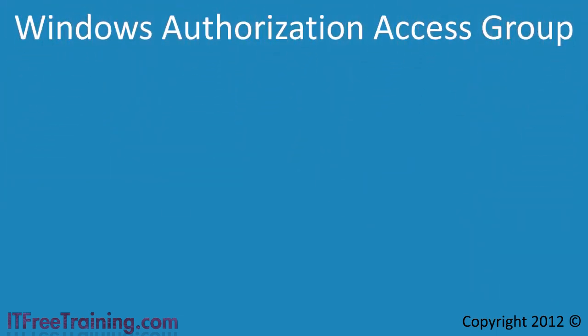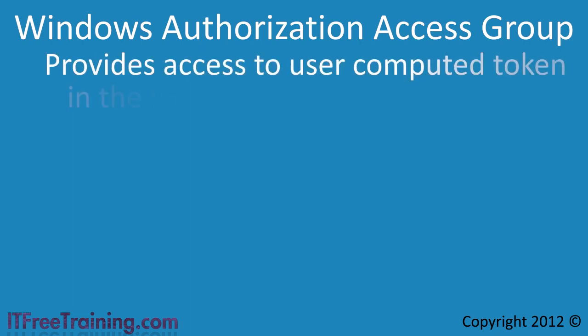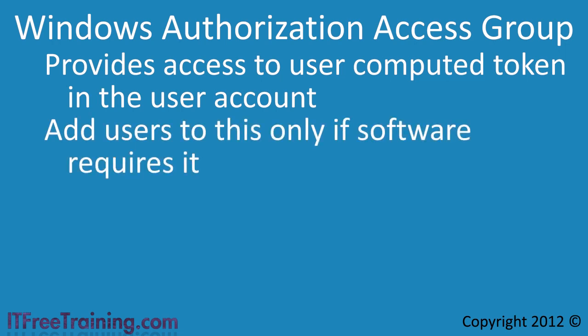The next group is the Windows Authorization Access Group. This group provides access to an attribute in the user account that provides a computed token for that user. A token is created when a user logs in and tells other systems what the user can access. This attribute in Active Directory allows applications to determine what the user has access to by looking at this pre-computed token, meaning software can access this token information without the user having to be logged in. You should only add users to this group if software specifically requires it.